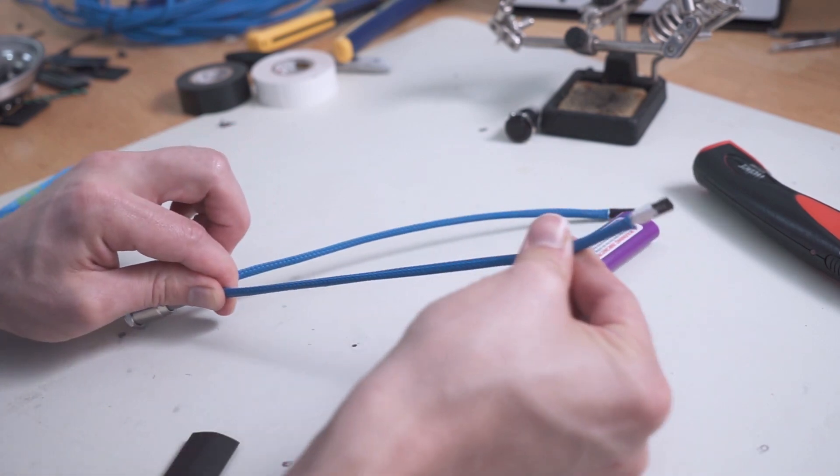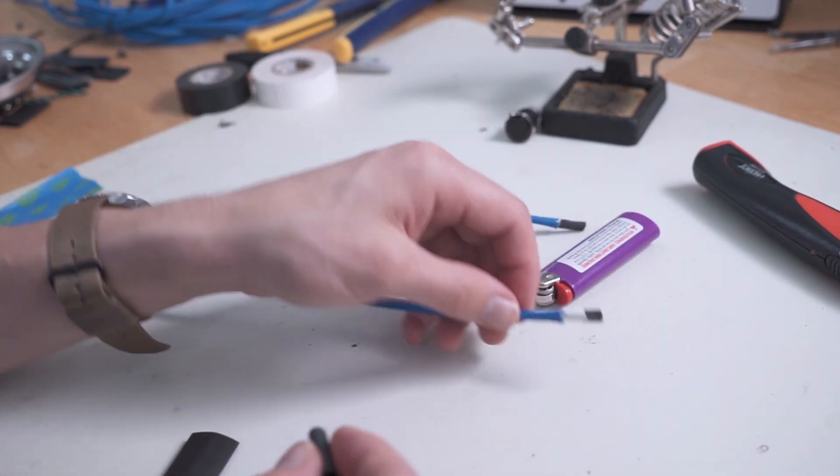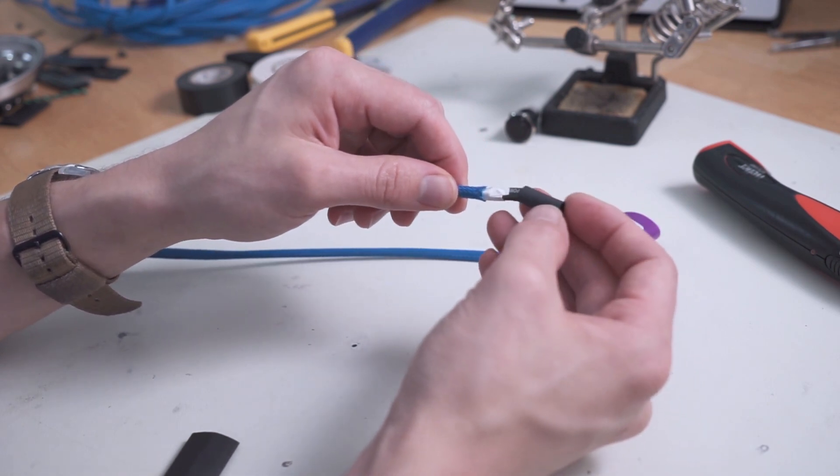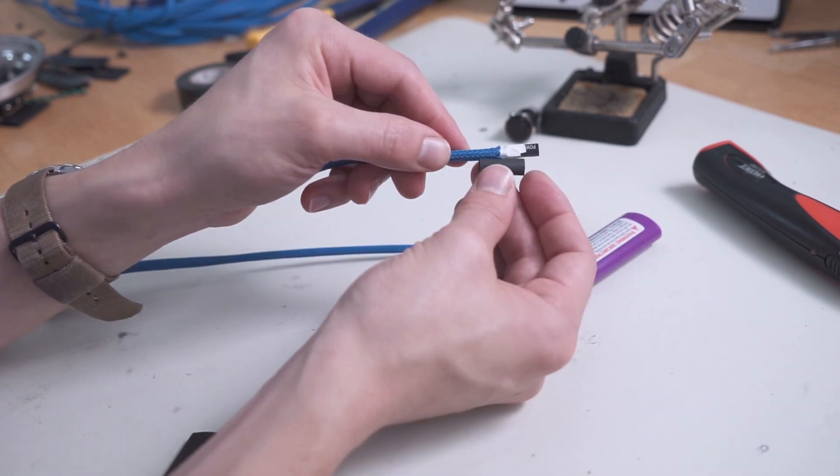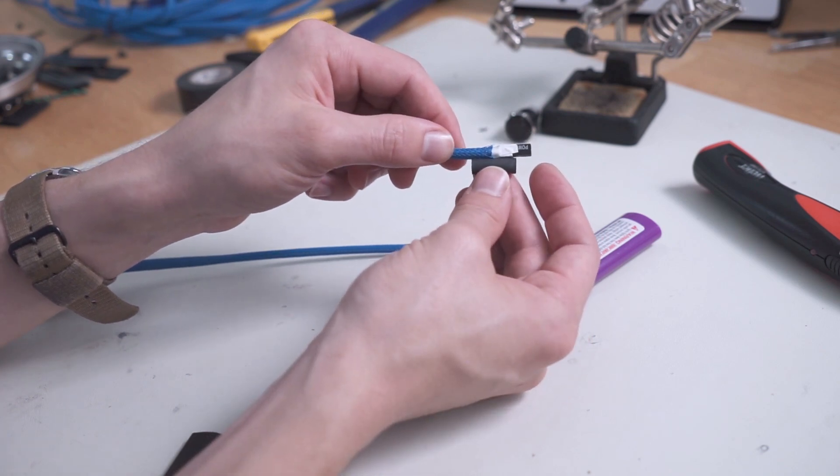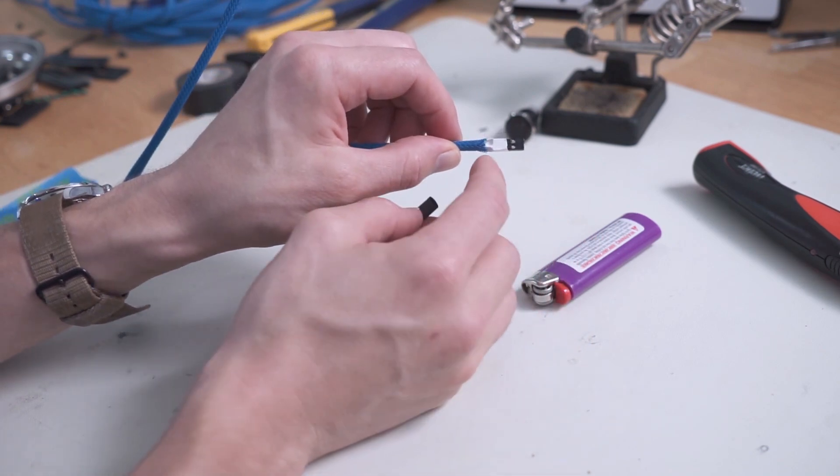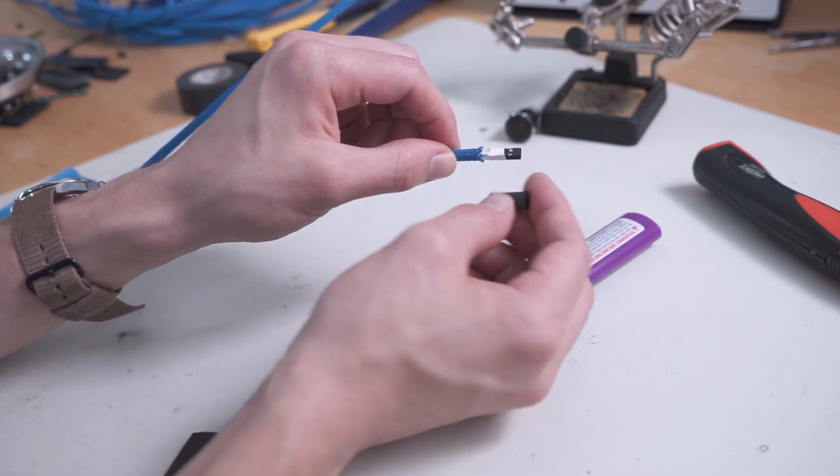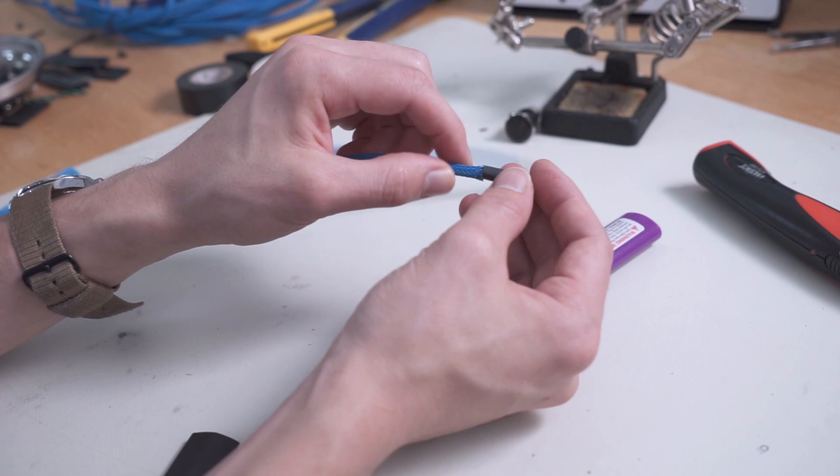So you want to get the sleeving nice and tight. Now we take our perfectly cut heat shrink and we stick it over the end and place it right in the middle. I cut my heat shrink a little bit longer than some people recommend because I like to keep the pin connectors from popping out. These things are really cheaply made so this gives a little bit extra strength.